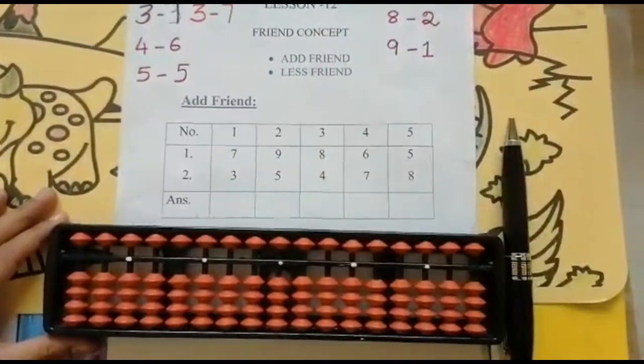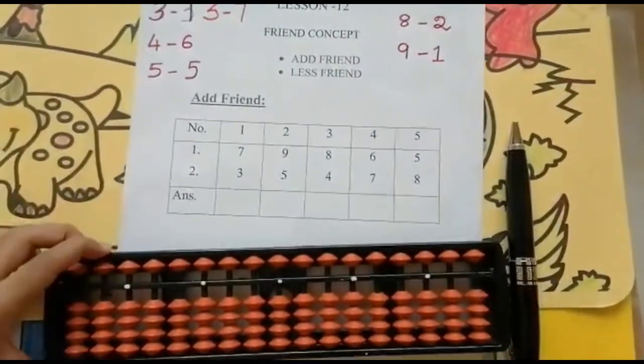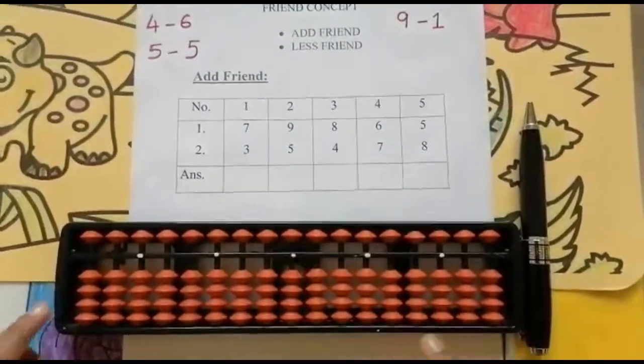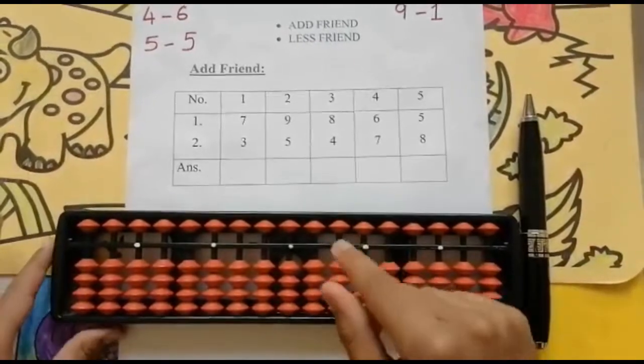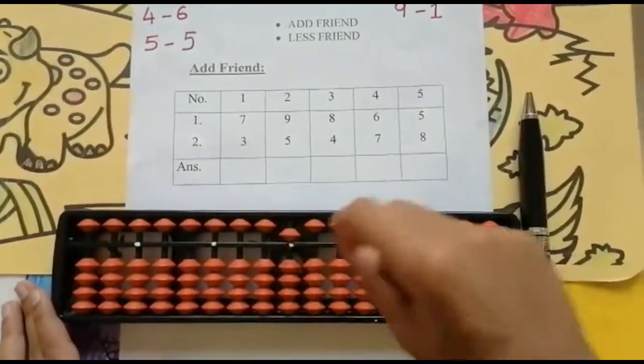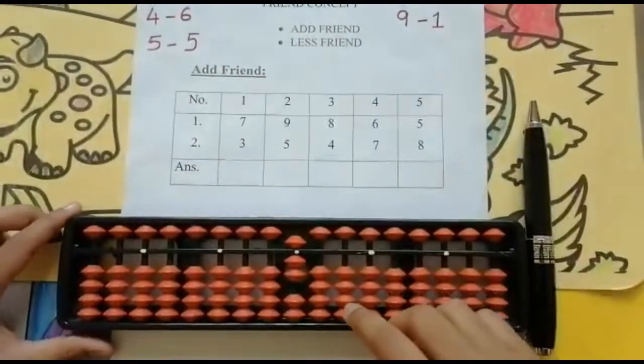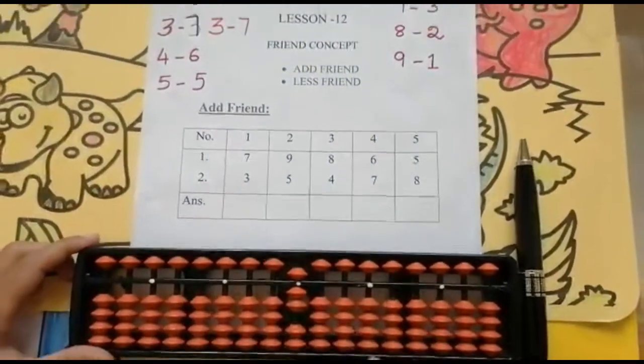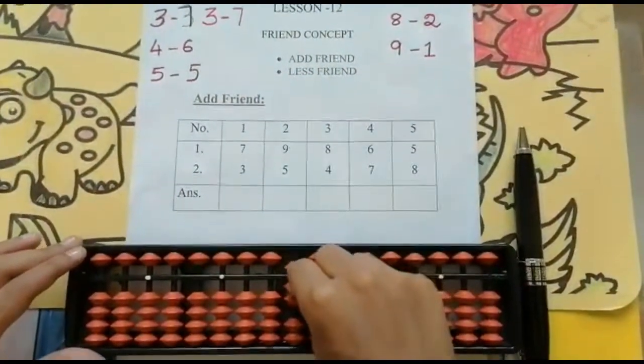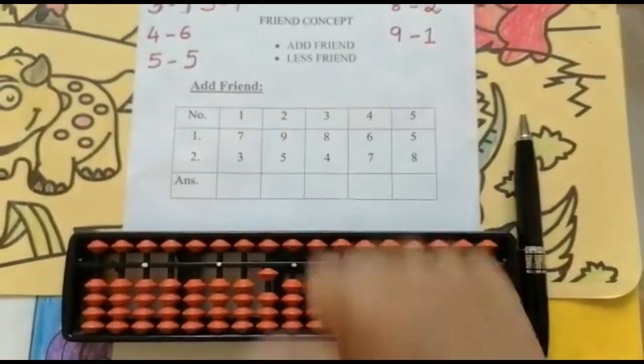In this video let us see some sums using friends concept. The first sum is 7 plus 3. Now look below, is it enough? Not enough, because I have only four values. So now look above and below. Four finger and thumb finger is five, six, seven. Keeping the finger got seven. Now add three, is it possible? Not possible. Now the friend concept comes. Friend of three is seven. So I will reduce seven first and then I will add ten. Reduce seven and then add ten. Keeping the finger got ten, one zero.